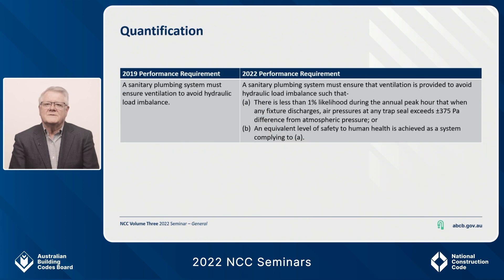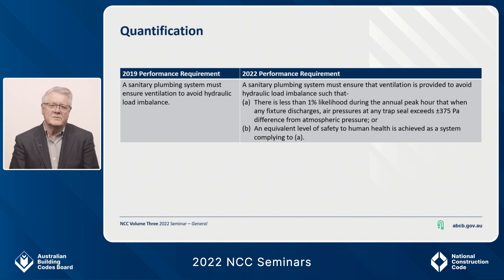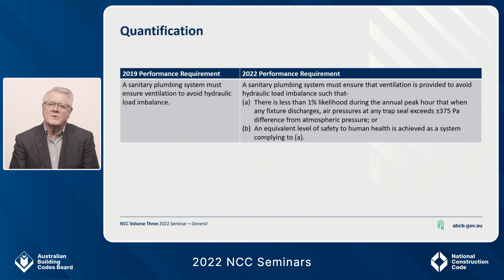The last example is for central plumbing ventilation. As you can see, the quantified performance requirement provides a limit of both positive and negative pressures within the system. This pressure limitation is set to ensure the trap seals are not affected and continue to prevent the escape of sewer gases into the building. This requirement obviously does not apply to a vacuum drainage system which operates in negative pressure. This is the last quantification example for now, but watch this space for 2025 as we continue to work our way through the performance requirements of the PCA.